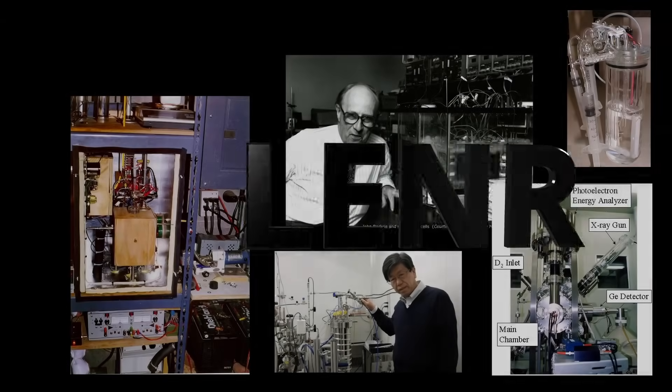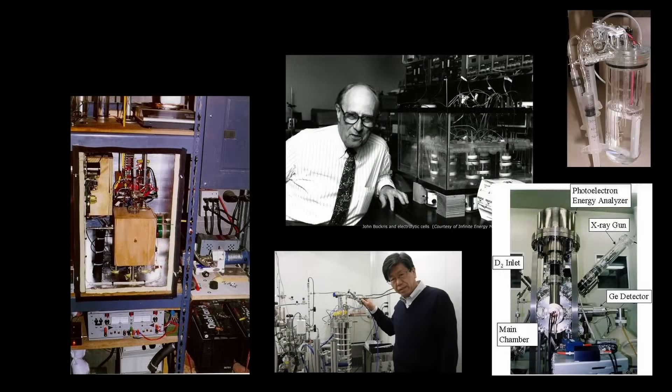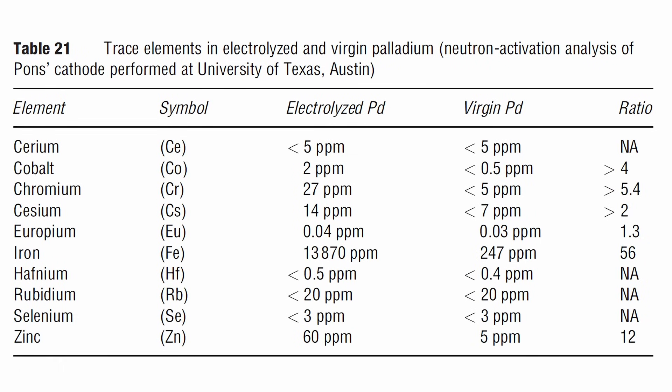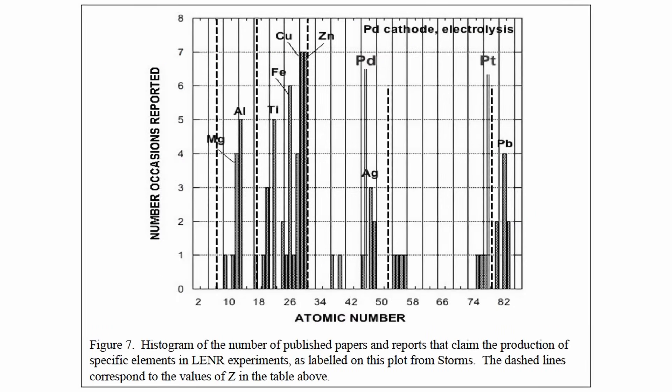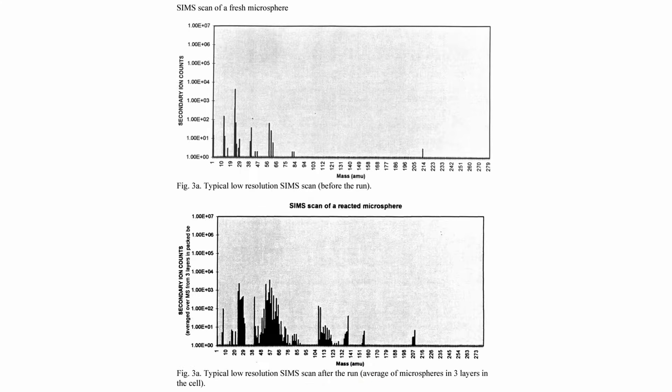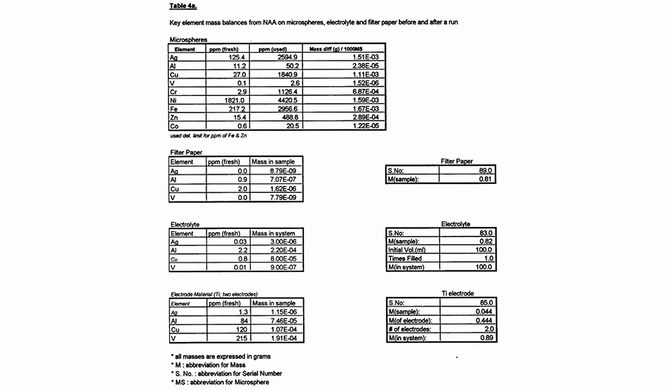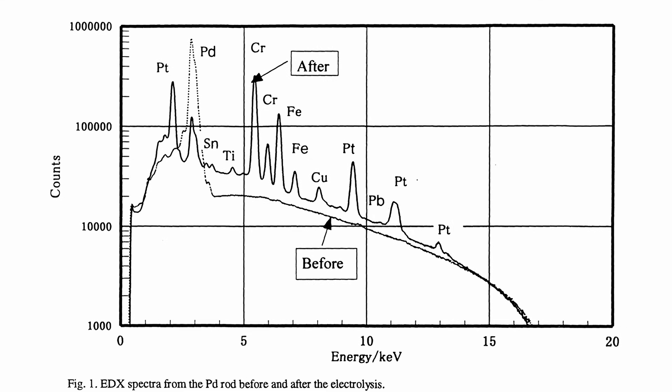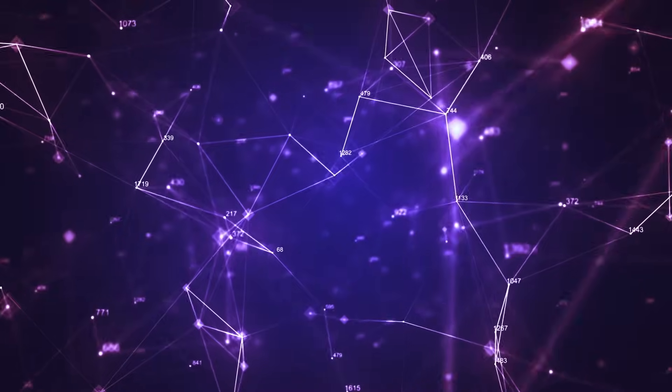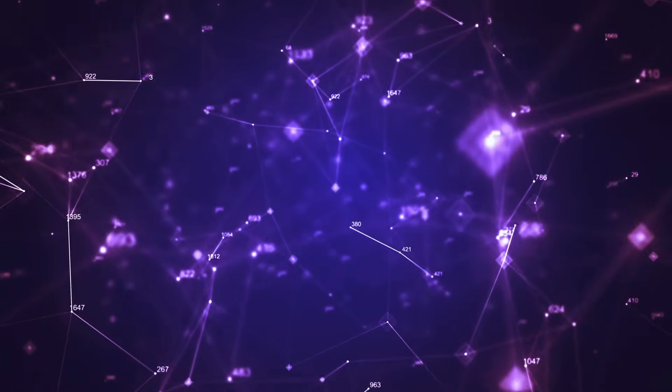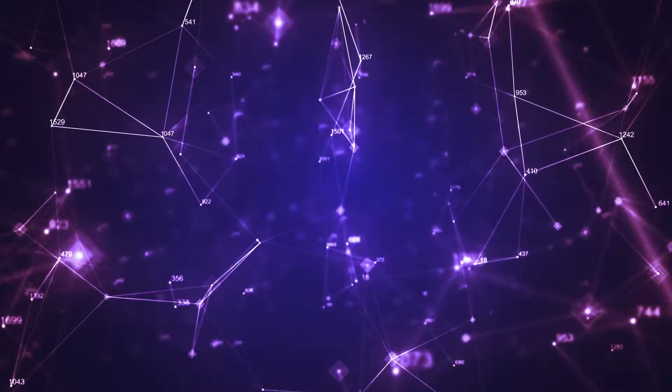Low-energy nuclear reactions have long been dismissed by many due to the varied results and anomalies reported across experiments. The inconsistency in findings has often led to skepticism, with critics arguing that such a diverse range of outcomes defies scientific coherence. But what if these seemingly disparate results actually followed a hidden pattern?